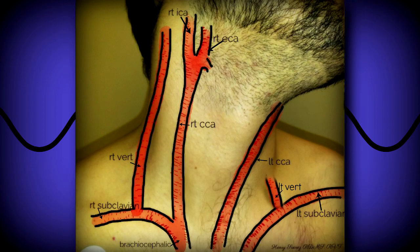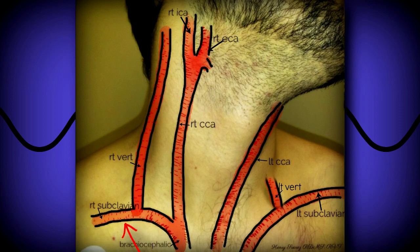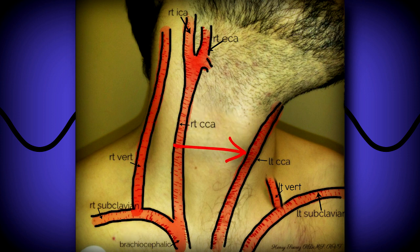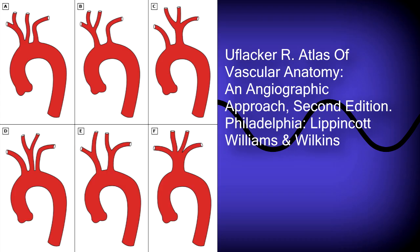The brain is fed oxygenated blood by four main vessels which have a common origin in the aortic arch. The typical configuration of the aortic arch consists of three vessels: the right brachiocephalic, also called the innominate, which bifurcates into the right subclavian and right common carotid artery; the left common carotid artery; and the left subclavian artery. There are variations to this anatomy, though 73% of the population has this configuration.